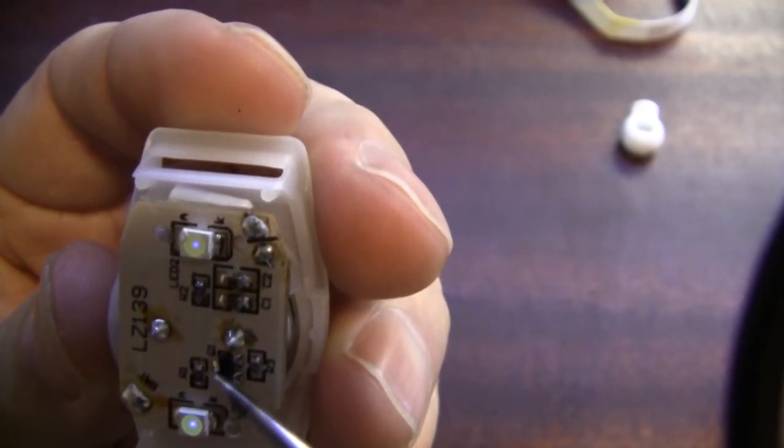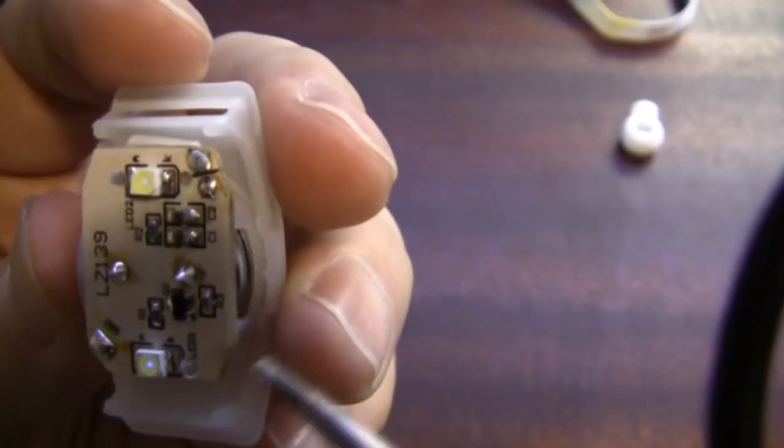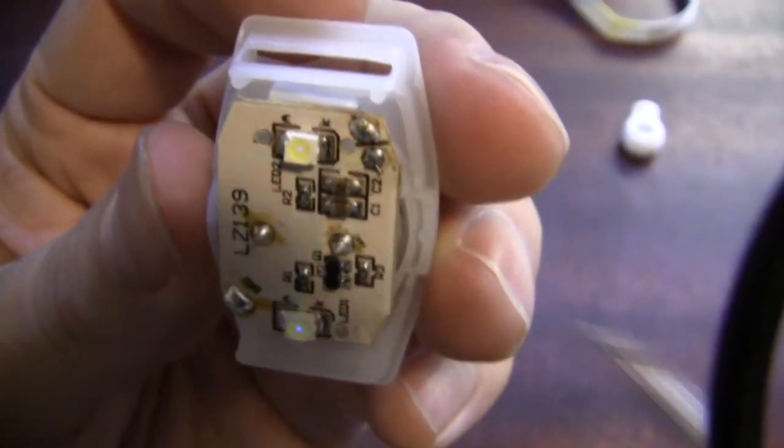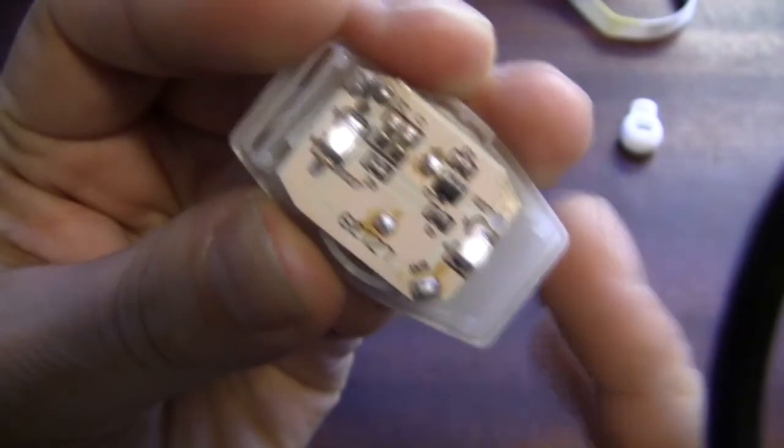There's a transistor, so this transistor is probably buffering the drive to the LEDs. And wow, could these little tiny capacitors here be charging up and holding that charge to give us the dimming effect?